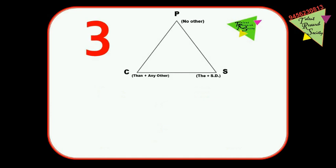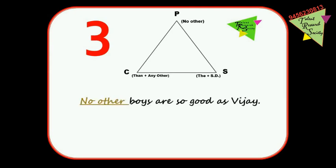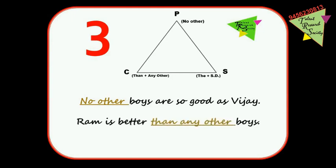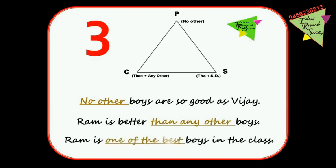Triangle 3: In positive, 'no other' is used; in comparative, 'than + any other' is used; and in superlative, 'the + superlative degree' with 'one of the' is used. Example: 'No other boys are so good as Ram' → comparative: 'Ram is better than any other boys' → superlative: 'Ram is one of the best boys in the class.' These rules also convert among themselves.